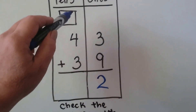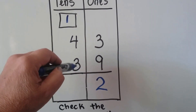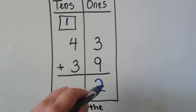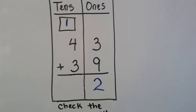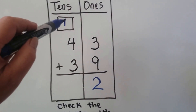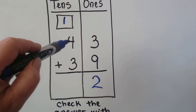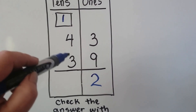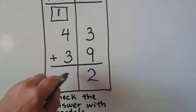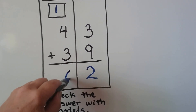We put the 10 in the tens place and the 2 ones in the sum of the ones place. We add the tens: 1 and 4 is 5, 6, 7, 8. We get 82.